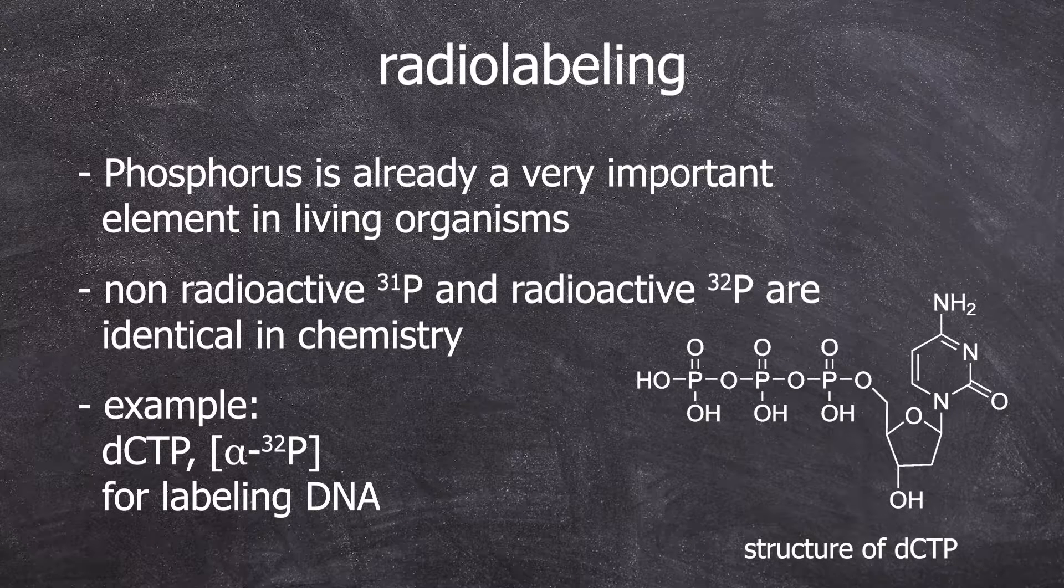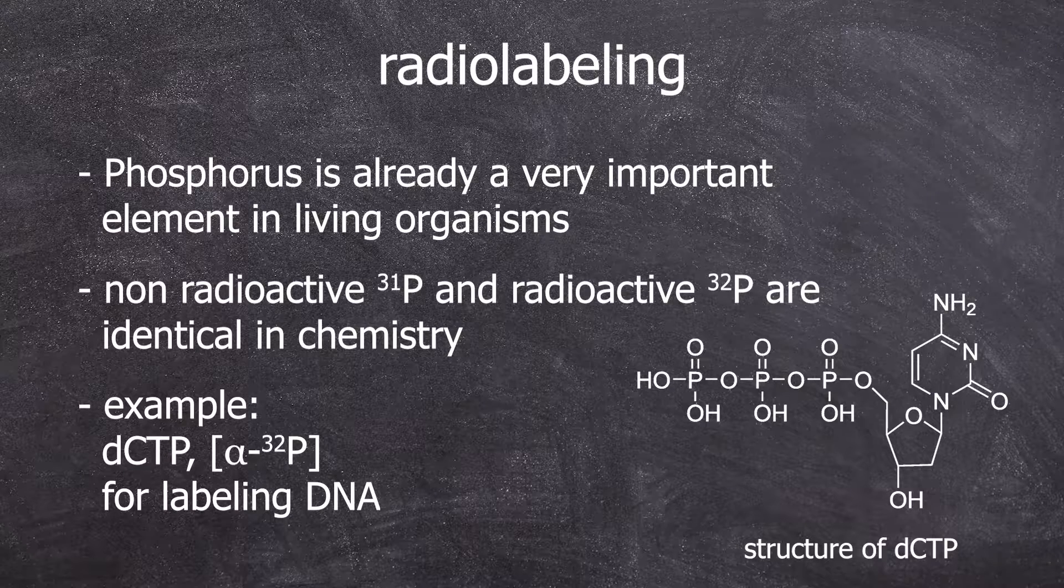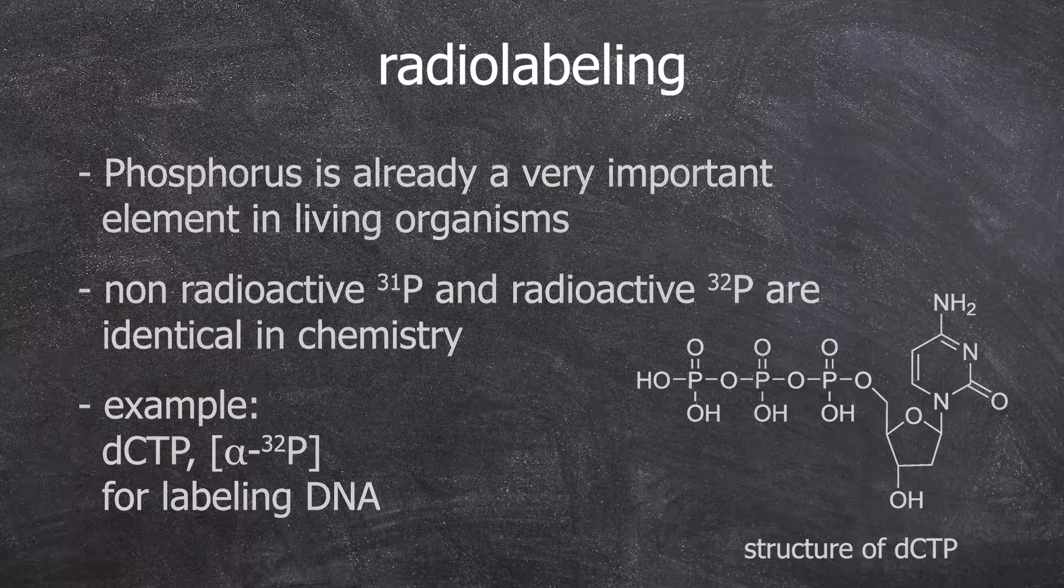For example, alpha-phosphorus labeled deoxycytidine triphosphate, DCTP, is used to label DNA. The advantage of radionuclide labeling is that one doesn't chemically alter the molecule, so no large fluorescent molecules are added that could potentially hinder some interactions. Instead, you just simply have a radioactive version of the same atom inside.